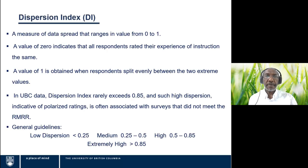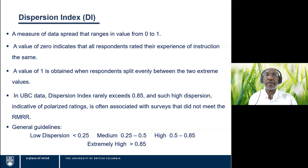The dispersion index replaced the standard deviation. You can think of it as a measure of how dispersed the student responses are. This measure, obtained from the literature, is suitable for ordinal data — it was actually designed for ordinal data. It has a range of values from zero to one. A value of zero indicates there is no dispersion; all respondents answered with the same category, such as all strongly agreed. A value of one is the extreme where respondents are split 50/50 between the two extreme responses — 50% strongly agreed and 50% strongly disagreed.